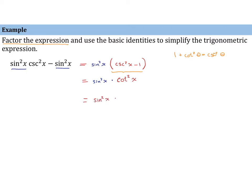We can rewrite cotangent squared of x using a quotient identity as cosine squared of x over sine squared of x. The sine squared of x's cancel, and we are left with cosine squared of x.